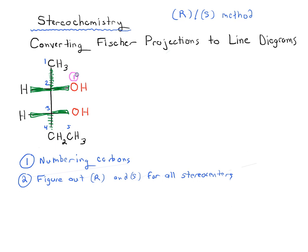The four atoms attached to carbon 2 are oxygen, hydrogen, carbon, and another carbon. Oxygen is certainly the highest priority — it has the highest atomic number. Hydrogen will be the lowest priority with atomic number one. Then we have two carbons and need to break a tie: carbon 1 has HHH attached, while carbon 3 is attached to O, C, and H. The oxygen breaks the tie, so carbon 3 is priority 2 and the methyl carbon is priority 3.